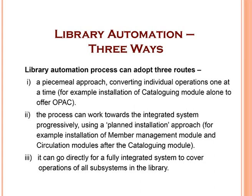Library automation may take place in three ways. We can take a piecemeal approach — starting with automating one particular process, say the cataloging process, then working towards an integrated system progressively, adding member management and circulation modules. Another approach is going directly for a fully integrated system covering all subsystems: cataloging, acquisition, circulation, serials control, and so on. Nowadays, with the availability of integrated library systems, the piecemeal approach is almost obsolete.